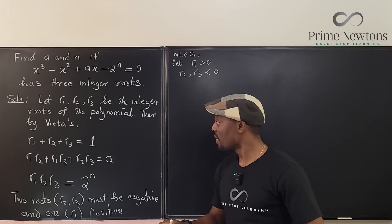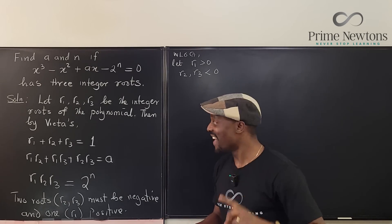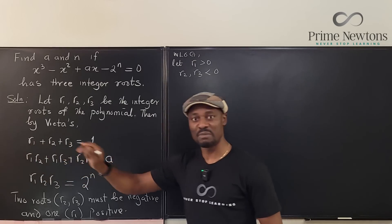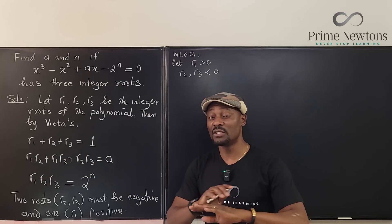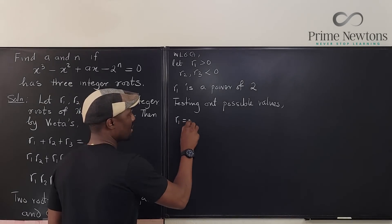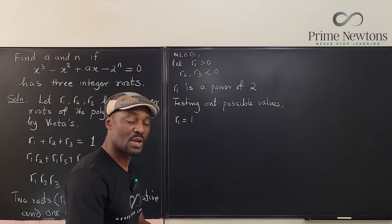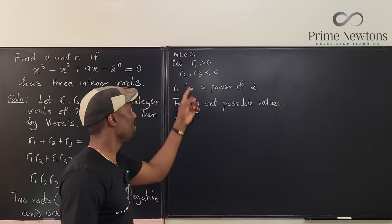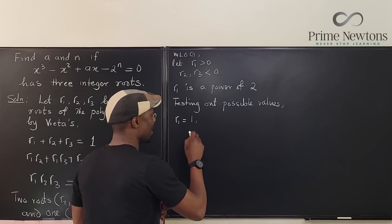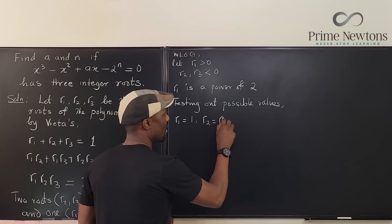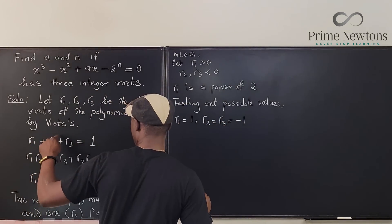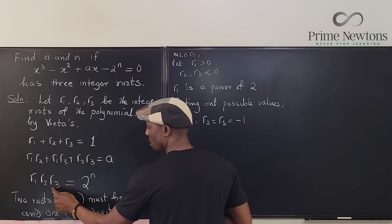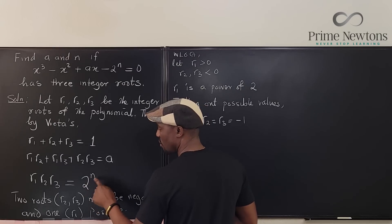So every root must be a power of two in magnitude. Remember, r2 and r3 must be negative and powers of two, and the product must be positive. Let's start with the smallest option: let r1 = 1, r2 = r3 = -1. For the product: 1 × (-1) × (-1) = 1 = 2^0, so n = 0. But checking the sum: 1 + (-1) + (-1) = -1, which does not equal 1. This combination does not work.